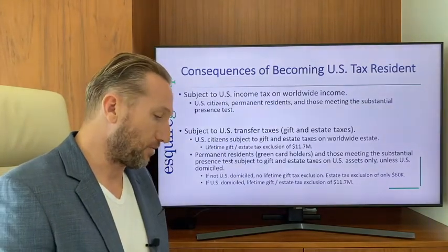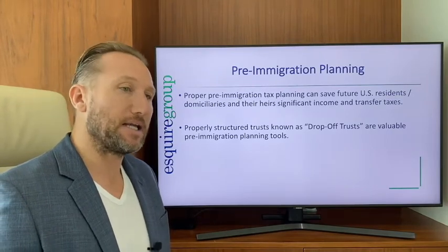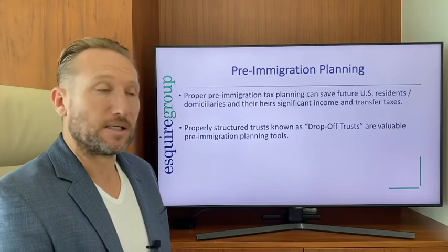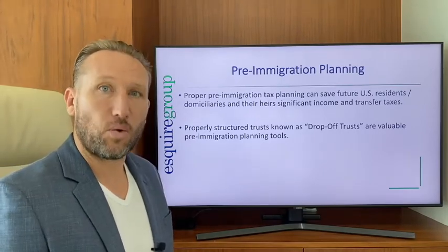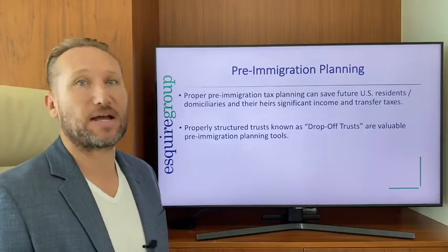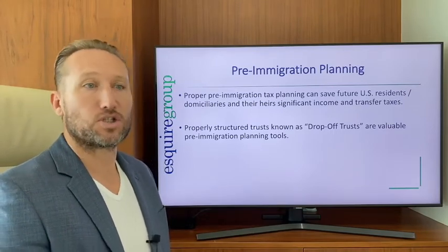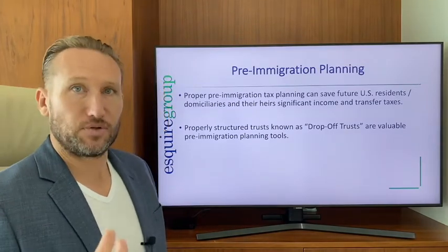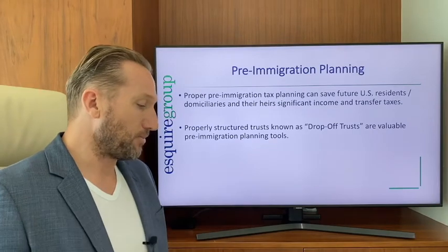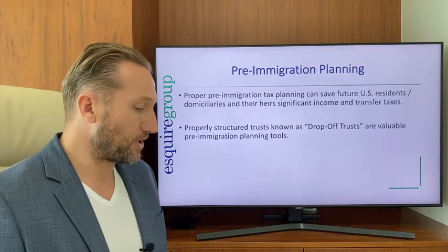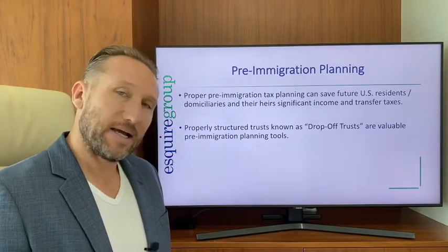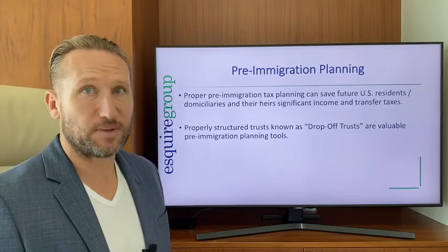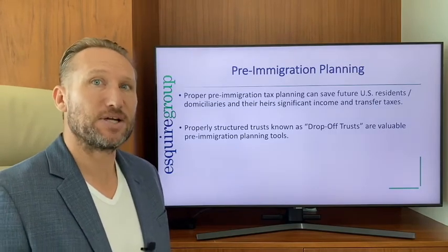Without pre-immigration planning, it is possible for a non-U.S. person who immigrates to the United States and becomes domiciled there to subject all of their worldwide income and assets to U.S. income taxes, gift taxes, and estate taxes. With proper pre-immigration planning, it's possible to save significantly as a U.S. resident and domiciliary. A drop-off trust is one of those tools that can help shield assets from transfer taxes — meaning gift and estate taxes — and possibly even income taxes, depending on when the trust was set up.